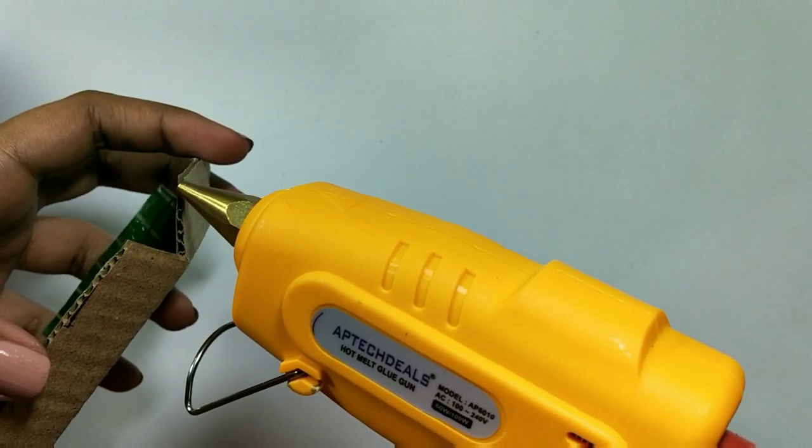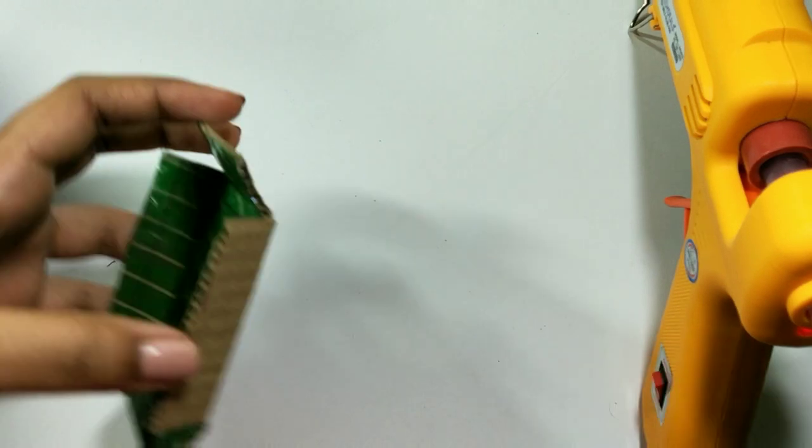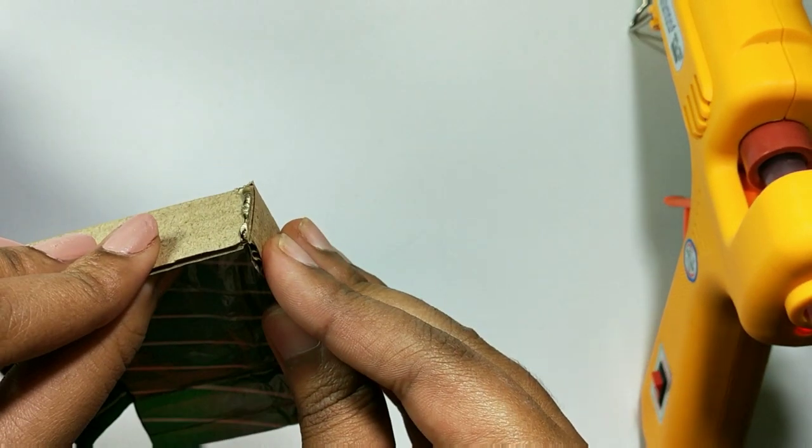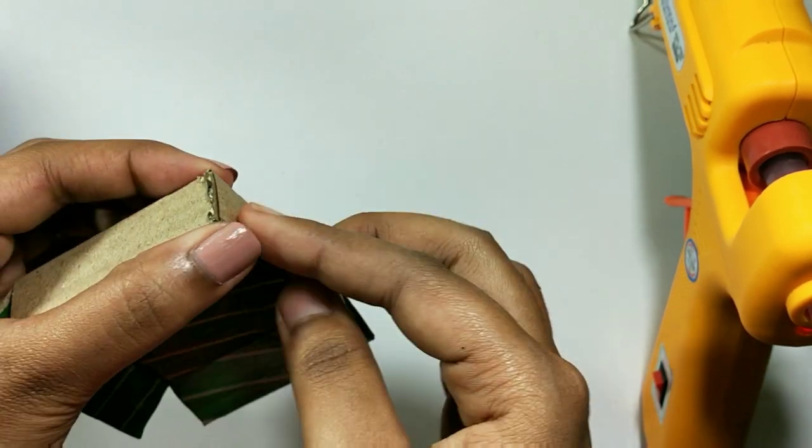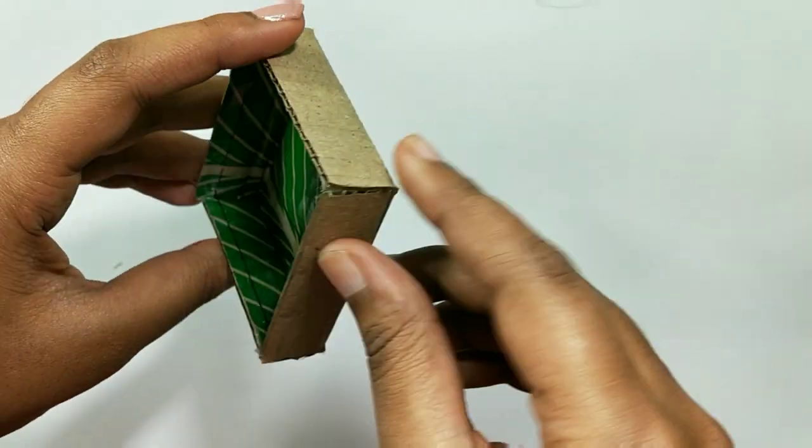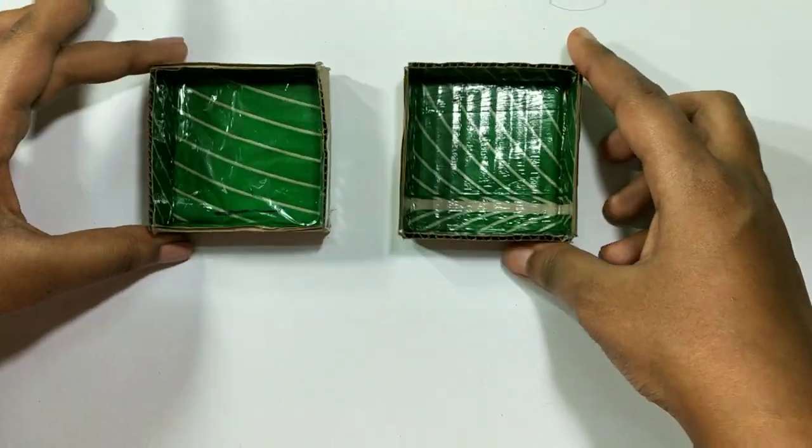Now, to make it look like a mold and to make its corners leakage proof, I am using hot glue to stick it. So, in the same way you can make two identical molds.